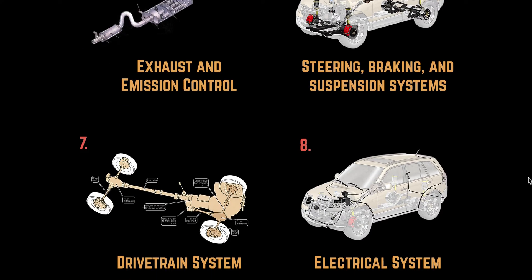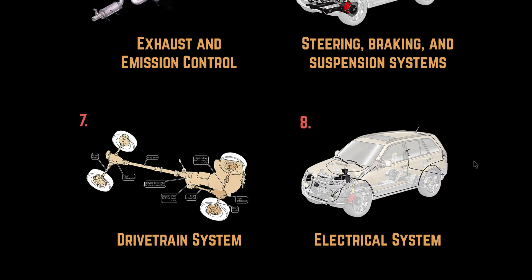Number seven: the drivetrain system. This transfers power from the engine to the drive wheels. The turning force from the engine crankshaft to the drive wheels is what it basically does. Drive chain configurations can vary depending on vehicle design.